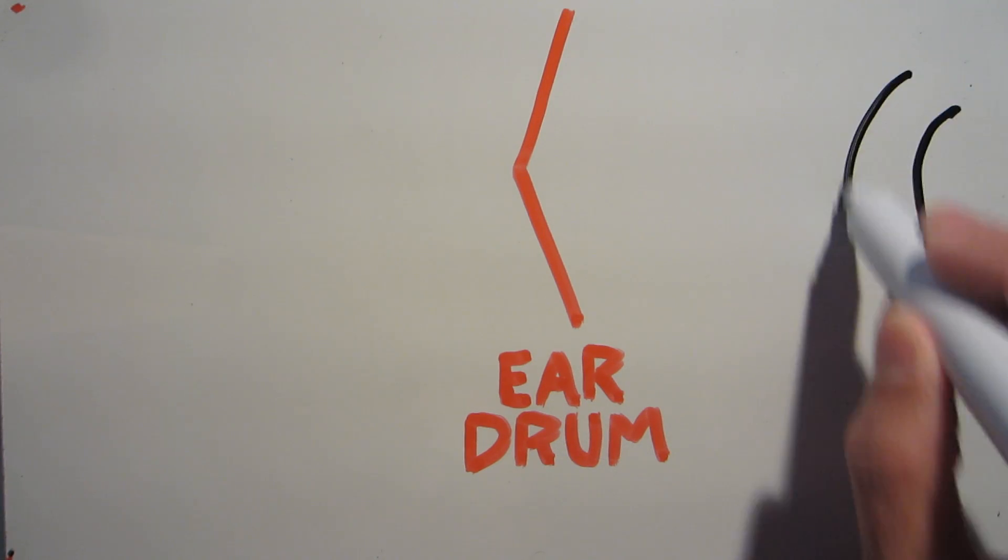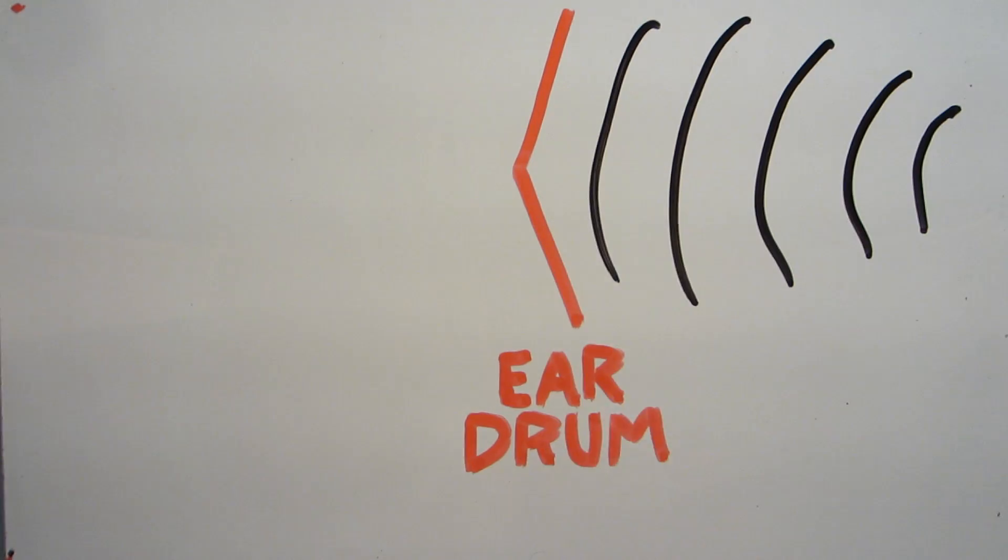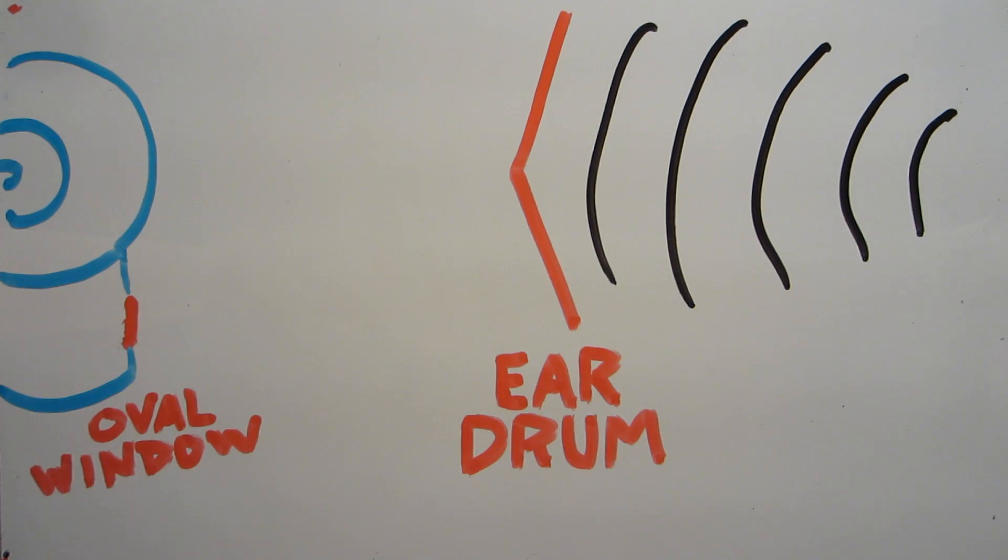Your eardrum acts as a collecting membrane, which is pushed in and out by the pressure waves in the air, and it transmits that force down to a smaller opening in the cochlea, called the oval window. The difference in surface area between the eardrum and the oval window basically magnifies the pressure that you're dealing with.